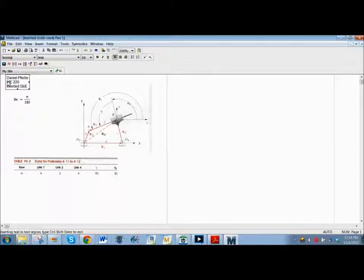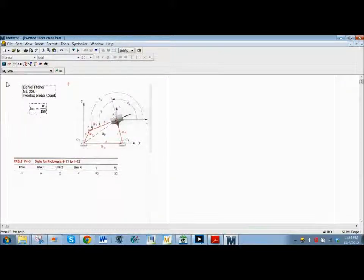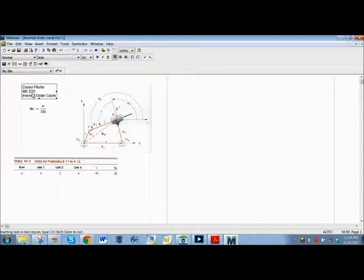So what we have to do first is obviously put our name and course or whatever. So I start a text region by using a quotation mark and then I can type Daniel and you just hit enter and go to the next line. Inverted slider crank. Now basics about moving things. You can select multiple blocks and move multiple blocks by selecting using your box tool, just click and drag.